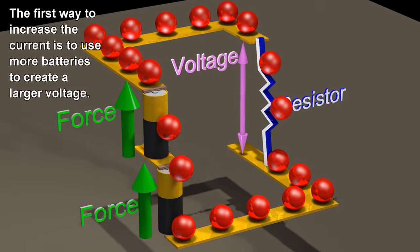The first way to increase the current is to use more batteries to create a larger voltage.